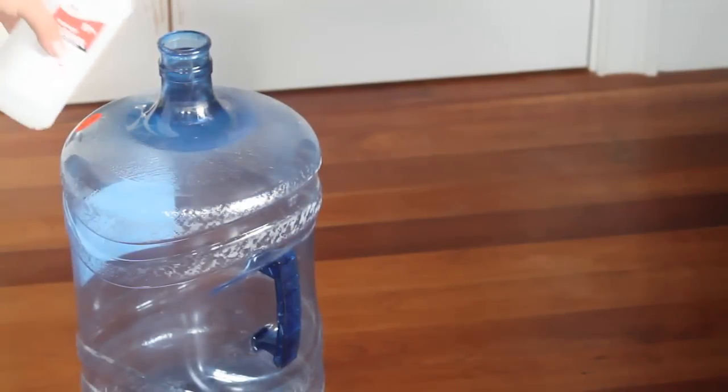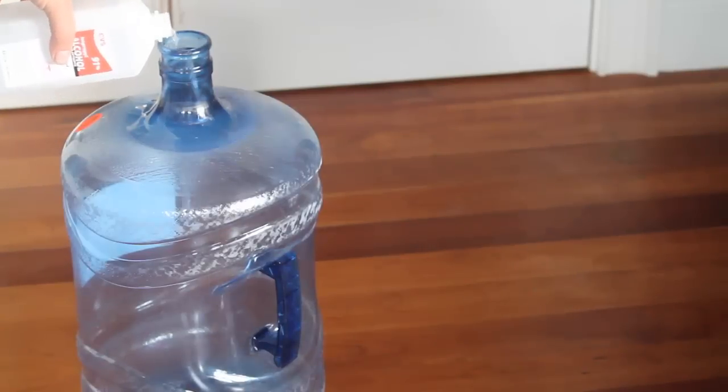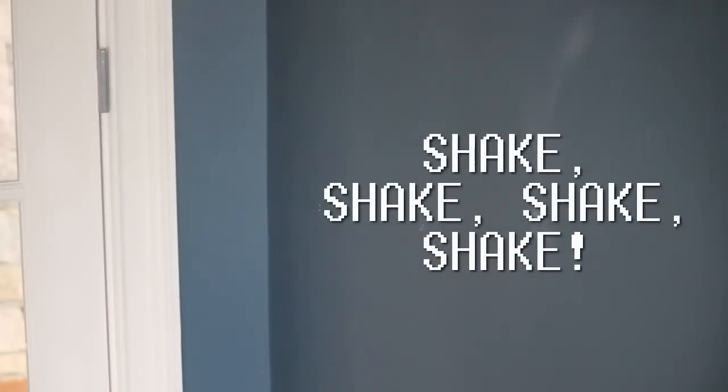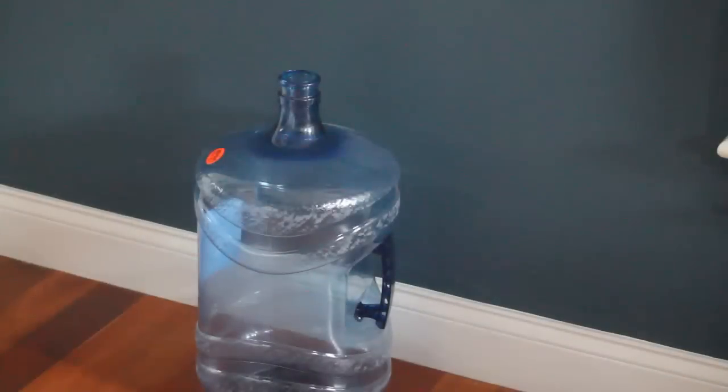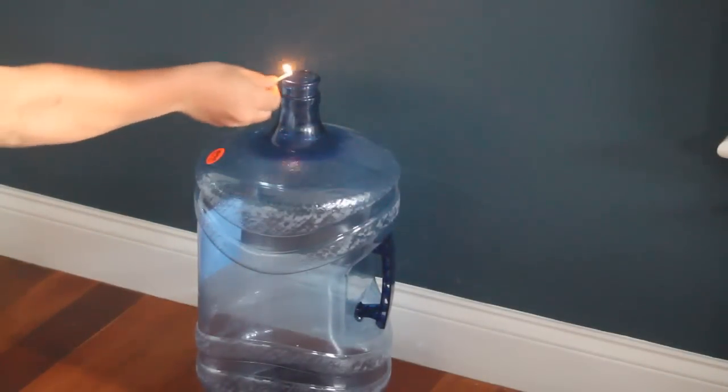First, what we need to do is simply pour our alcohol into the container. I'm using rubbing alcohol here. Then we've just got to vigorously shake it for a while. Just shake it until we think it's vaporized, and now I present to you the explosion.